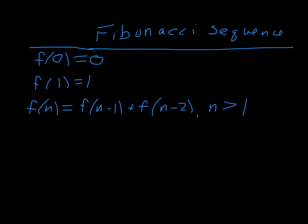Here's probably the most famous recursively defined function out there — it's called the Fibonacci sequence. This one is special for a couple of reasons: it shows up in nature everywhere, and the basis step has two parts. The basis step defines f(0) = 0 and f(1) = 1. Then both of these are used to define values for higher integers: f(n) = f(n-1) + f(n-2) whenever n is greater than 1.